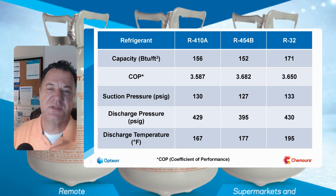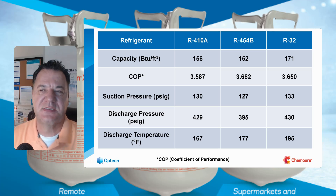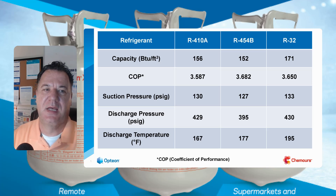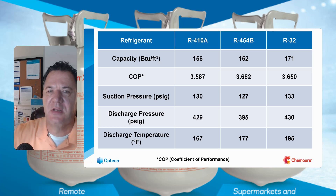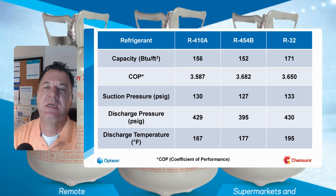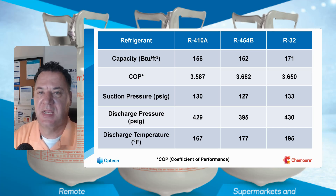The coefficient of performance sounds real fancy, but really in very simplistic terms, it's how much capacity your evaporator is putting out compared to how much energy your compressor or the system is using. This is the most important number that designers and developers look at when they're designing a system.